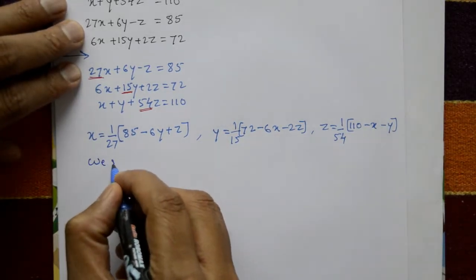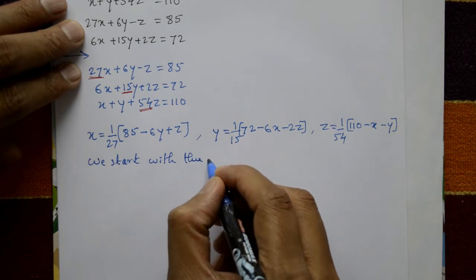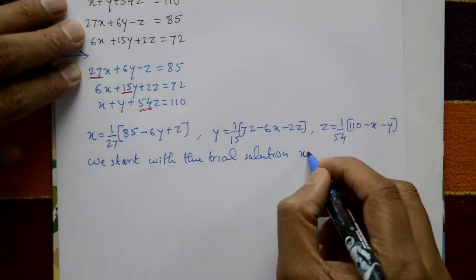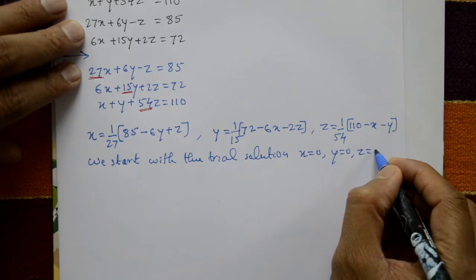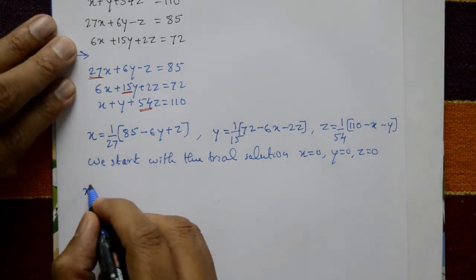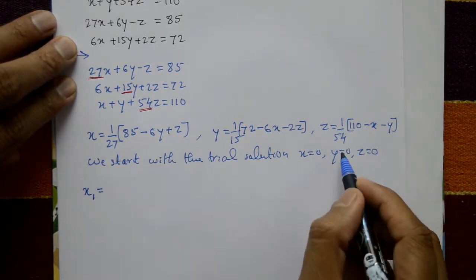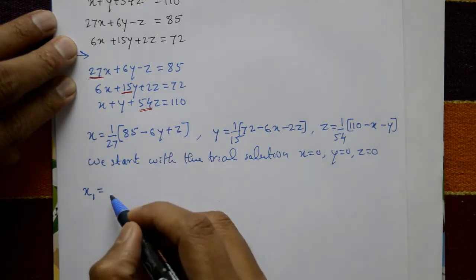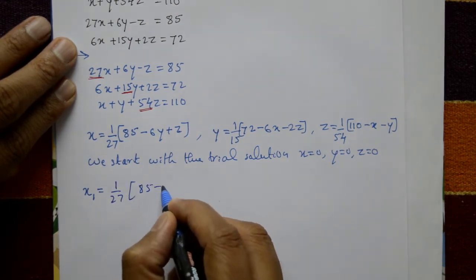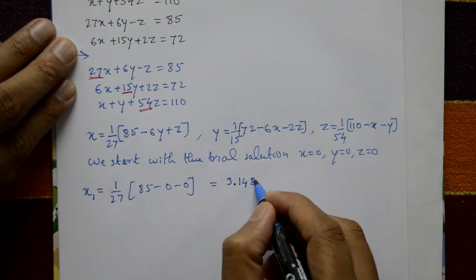Start with the trial solution x = 0, y = 0, z = 0. Substitute y = 0 and z = 0 into the x formula: x1 = (1/27)(85 − 0 − 0) = (1/27)(85) = 3.14815.